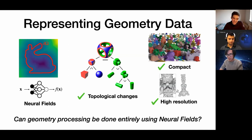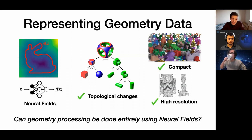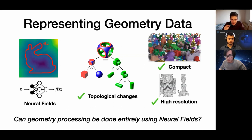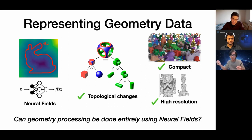Just to make sure we understand neural fields: we have a network that takes coordinates — for example, 2D coordinates in an image — and outputs a single number. We represent the surface as the set of all points that have the same f(x) output — typically the zero level set. So the shape is a collection of spatial coordinates where the field function evaluates to a certain constant.